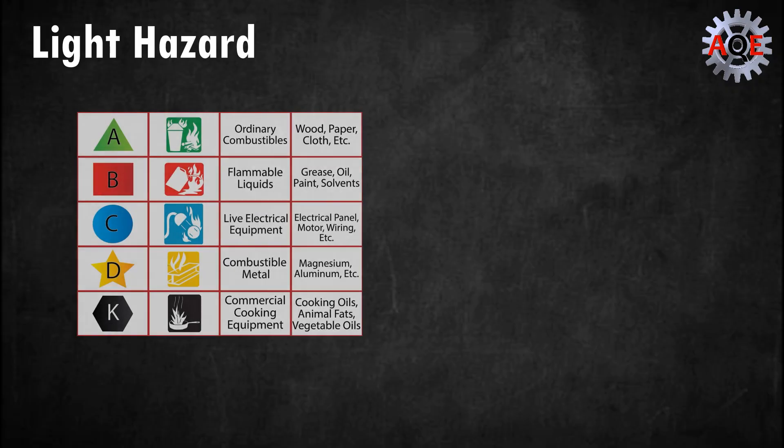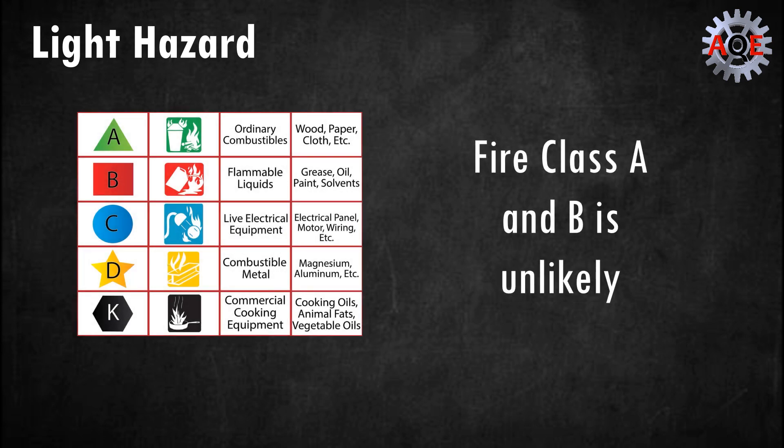Light hazard. These are locations where combustible products and the quantity of class A combustibles and class B flammables are incredibly unlikely. Class A combustibles include paper, refuse, and fabrics among others, while class B flammables include flammable liquids.